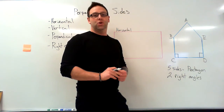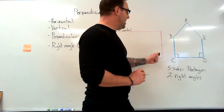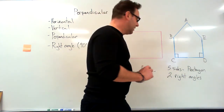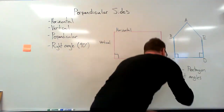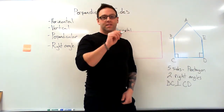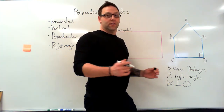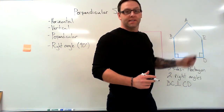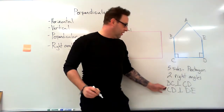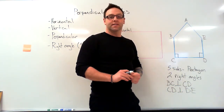So we've got two right angles and five sides — that's a pentagon. We can say that line BC is perpendicular to line CD. We show that using this symbol — it looks like an upside-down T. Line BC is perpendicular to line CD, and we've also got line CD is perpendicular to line DE.